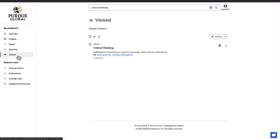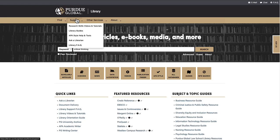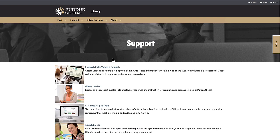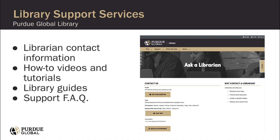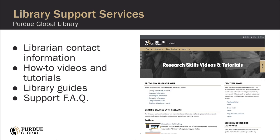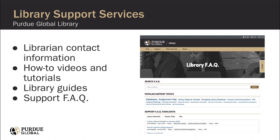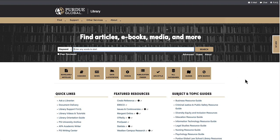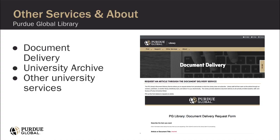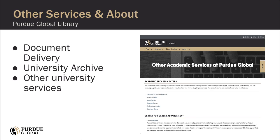To help you find information, we also have support resources and services all located in the support section. Here you can find links to contact library staff, watch videos and tutorials just like this one about research skills and navigating library resources, find library guides for many different subjects and topics, as well as a searchable support help with entries on a number of questions and topics. Most of the time, you'll find what you need on our homepage find or support sections, or the guide linked to in your classroom. But we do provide additional resources and content like our document delivery service and links to other Purdue Global services in the other services and about sections.